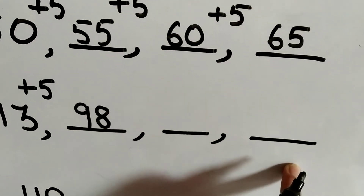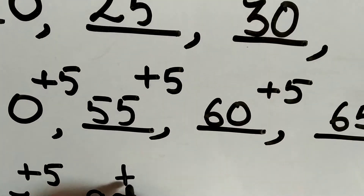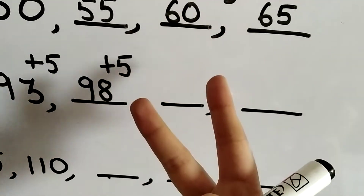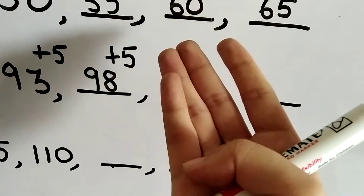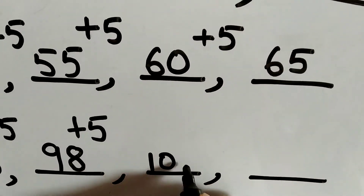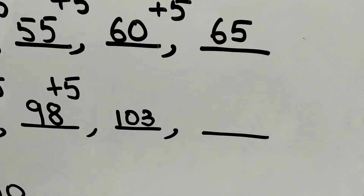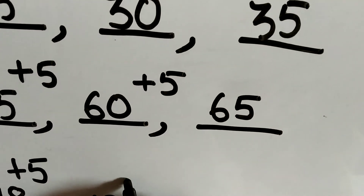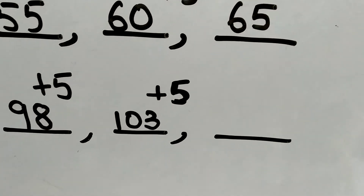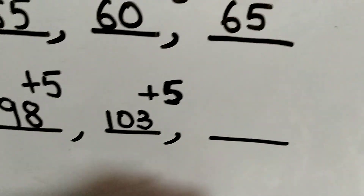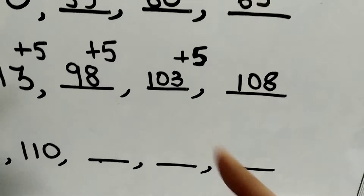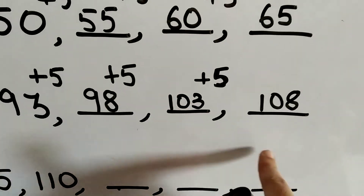Now to complete the remaining blanks we again add plus 5. So 98 plus 5: counting 99, 100, 101, 102, 103 — we write 103 here. Then again we add plus 5: 103 plus 5 is 108.